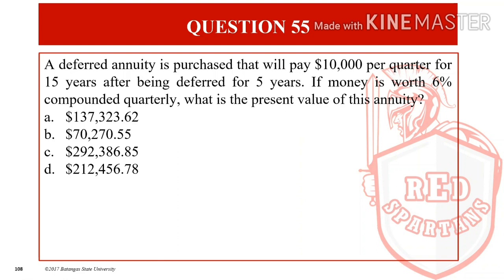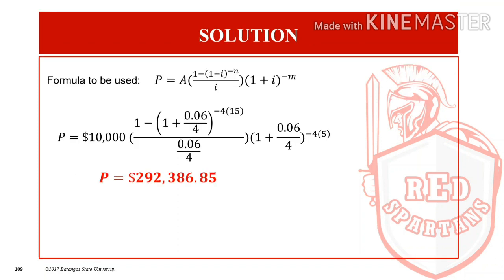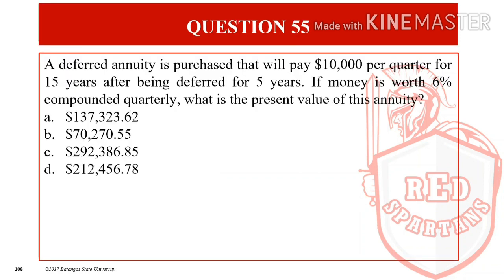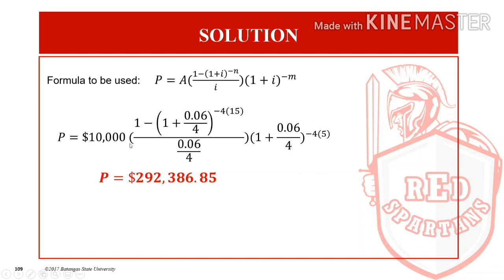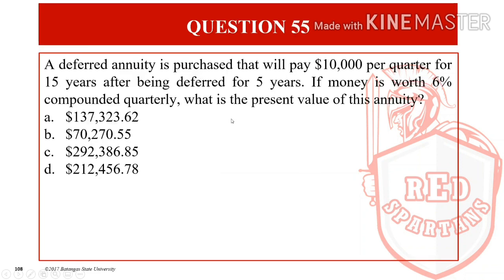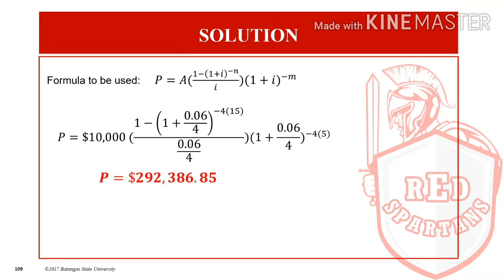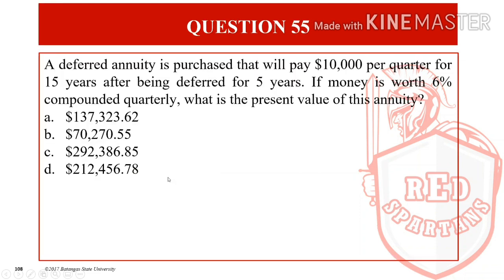For question number 55, a deferred annuity is purchased that will pay $10,000 per quarter for 15 years after being deferred for 5 years. If money is worth 6% compounded quarterly, what is the present value? Using the deferred annuity formula: $10,000 × (1 − (1 + 0.06/4)^(−4×15)) / (0.06/4) × (1 + 0.06/4)^(−4×5). The answer is $292,386.85, letter C for question number 55.